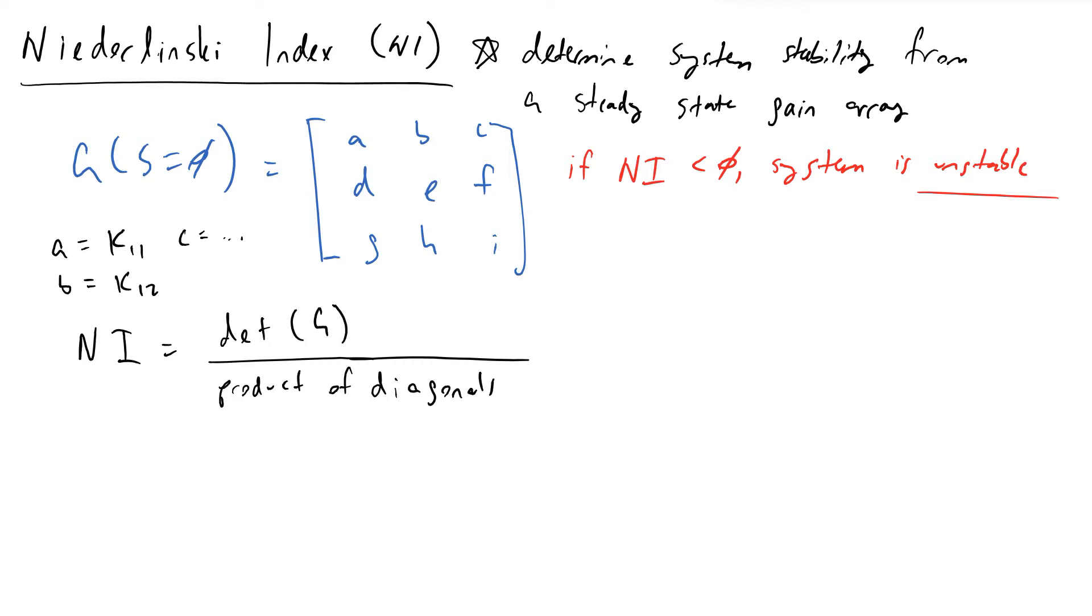And so if we let s equal zero and we determine what our steady state gains are such as k11, k12, and so on, we are going to be able to make use of something referred to as the Niederlinski index in order to determine whether or not our system is stable.